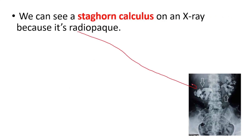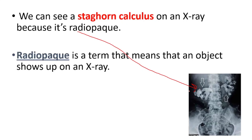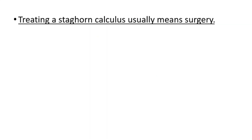We can see staghorn calculus on an X-ray because it is radiopaque. Radiopaque is a term that means that an object shows up on an X-ray.